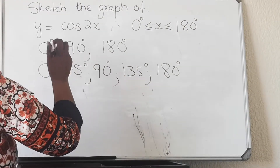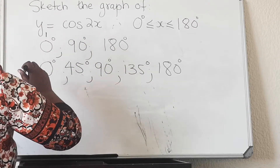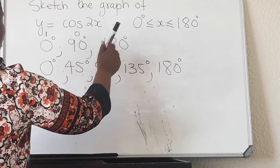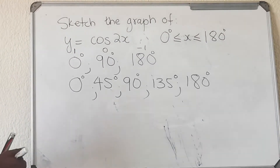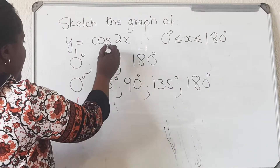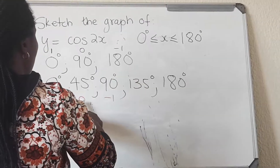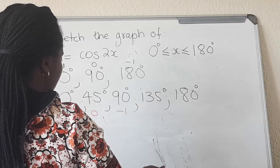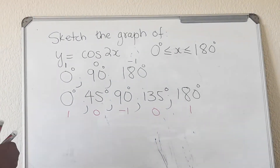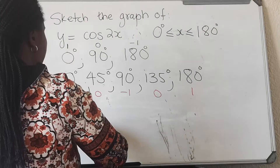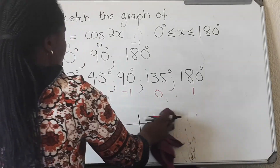Now we write the intercepts. For the original cosine, at zero degrees the y-value is one, then it goes to zero, then to minus one. For the new function, you take those y-values: one, zero, minus one, and follow the pattern — the graph goes from minus one back to zero, and then from zero back to one.